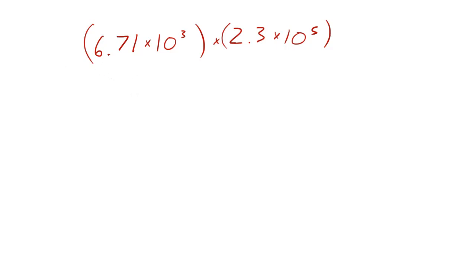So let's solve these problems again. 6.71 times 10 to the 3 times 2.3 times 10 to the 5th power equals 6.71 times 2.3 times, and I might skip a couple steps here, 10 to the 3 plus 5, which is 8. So basically what we have is 15.433 times 10 to the 8th.